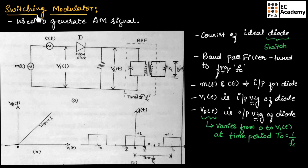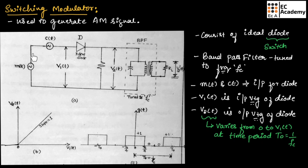Switching modulator consists of an ideal diode which is used as a switch. This diode is followed by a band pass filter which is tuned to frequency FC, meaning this band pass filter will allow signals having the frequency FC. The message signal as well as the carrier signal are simultaneously applied as input to the diode, so the input voltage V1(t) depends upon the message signal and the carrier signal.